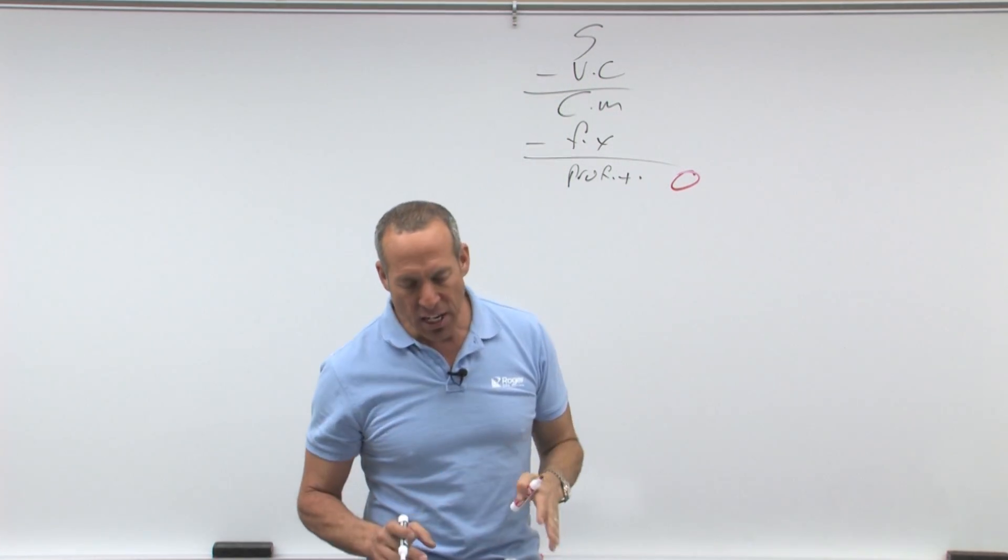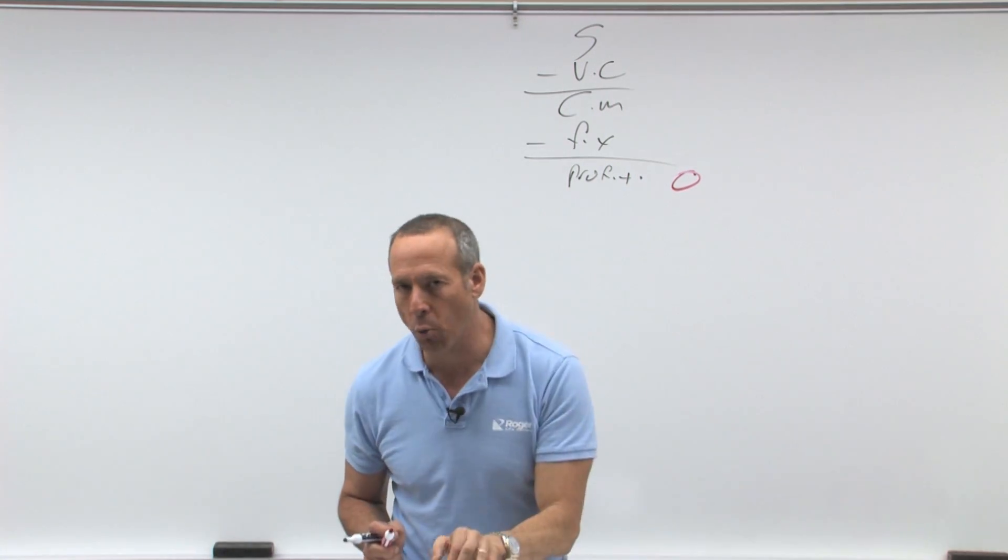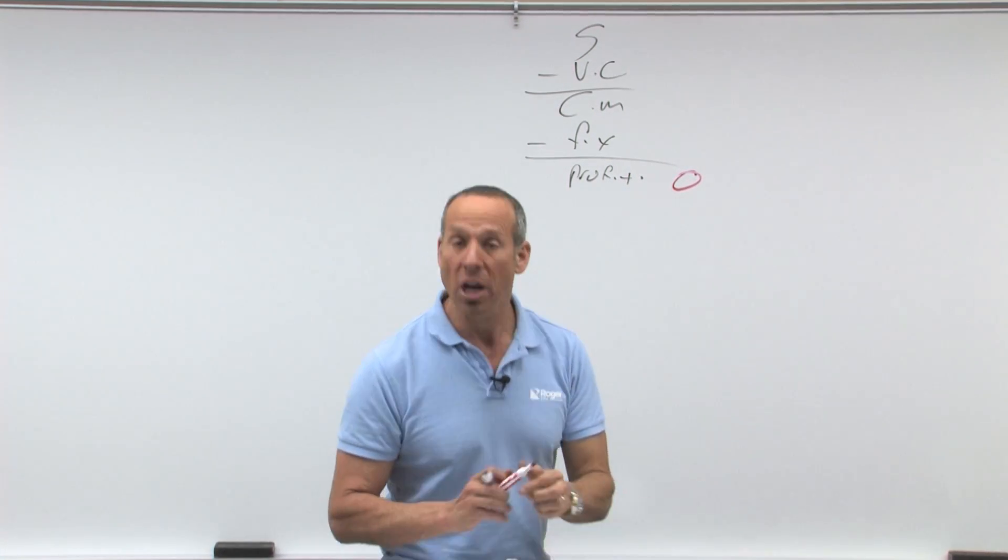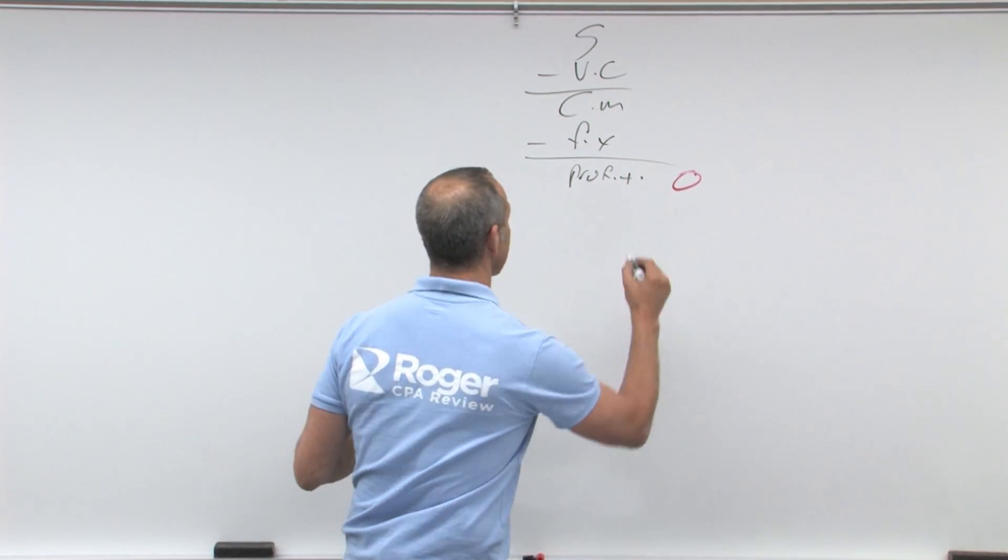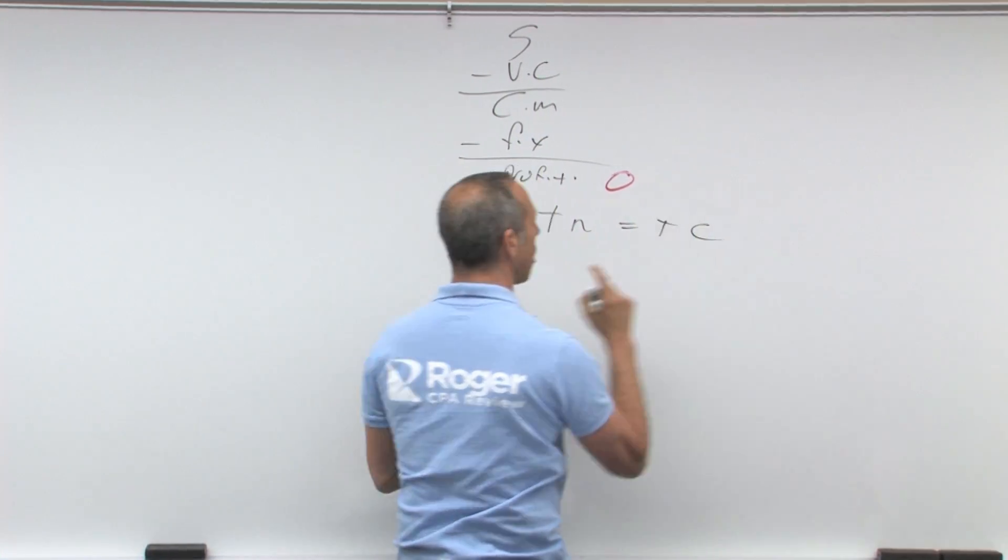So with breakeven analysis, breakeven occurs where what? Where total revenues equal total cost. So let's look at this. Total revenue equals total cost.